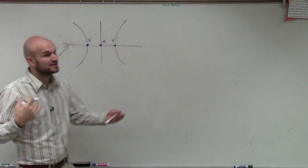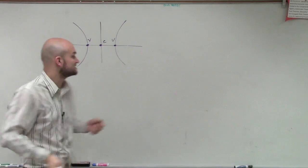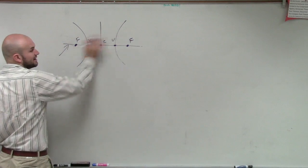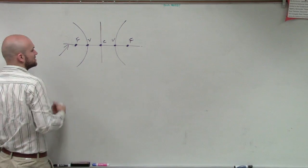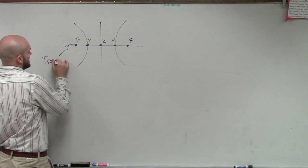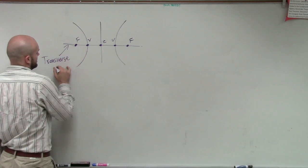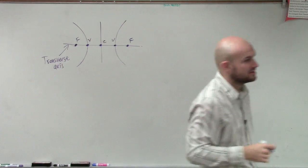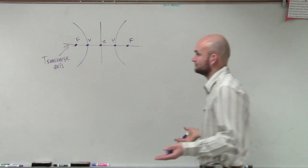Remember, the center's going to be right in between your two vertices. And it's also going to be the center of your two foci. The distance between your two foci is going to be on your center. This is what we call the transverse axis. It's kind of like the major axis of an ellipse.